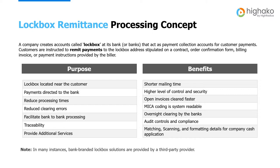The original benefits were shorter mailing time — not true today. There was supposed to be a higher level of control and security, but going through the postal system is probably the least secure these days given a lot of mail theft, not to mention that the handoffs from customer to postal system to bank are indirect and something could go wrong. Open invoices are said to be cleared faster — maybe cleared by the bank and the money is available to them, but it won't be faster for the person actually receiving the remittance advice and the copy or information that was on the check.